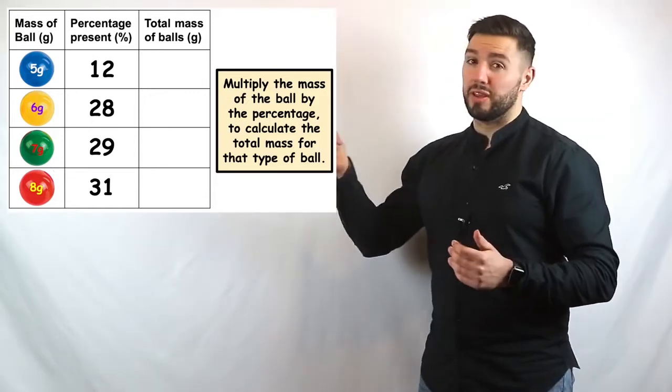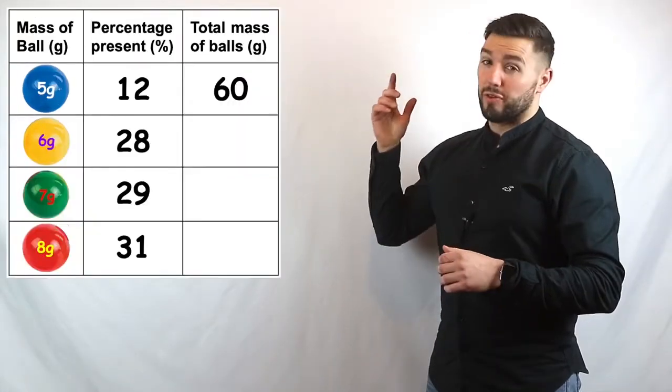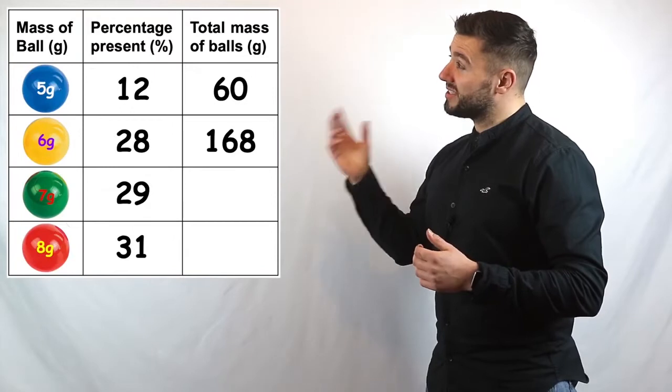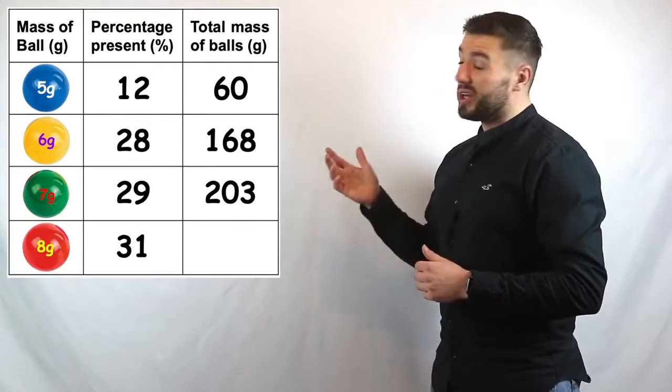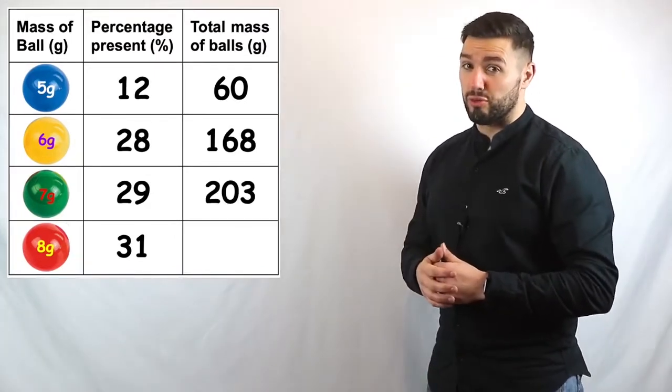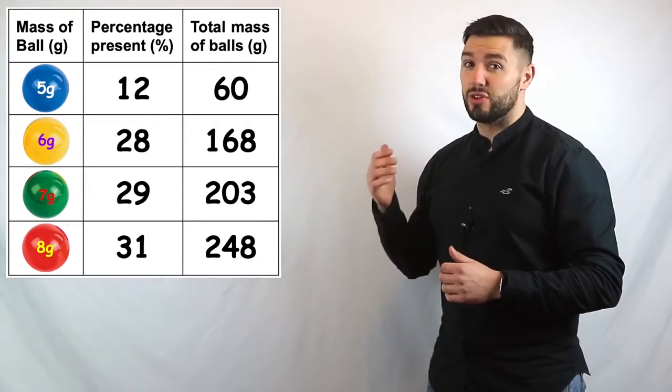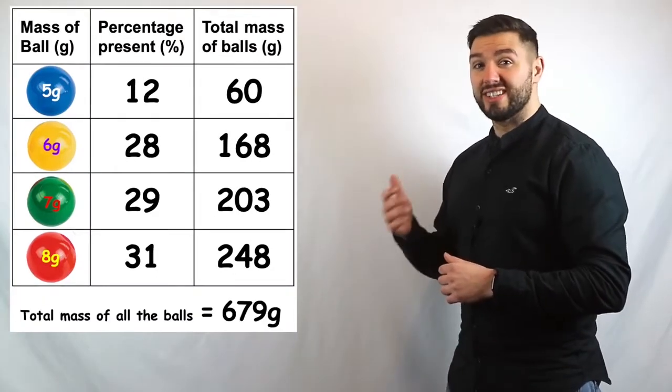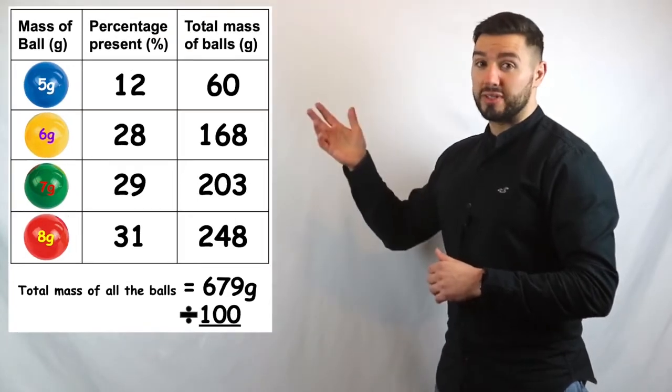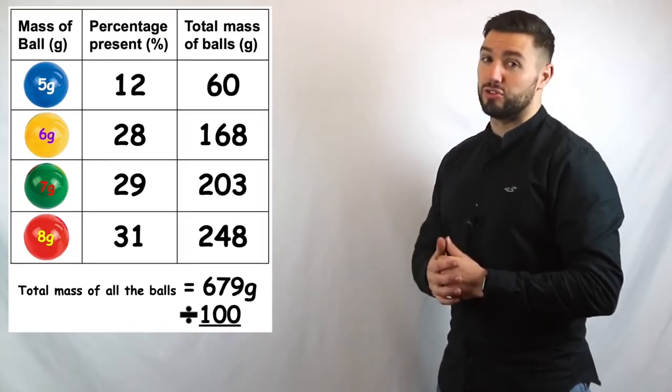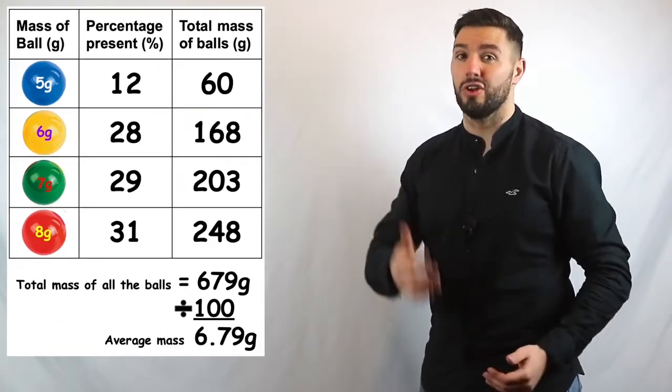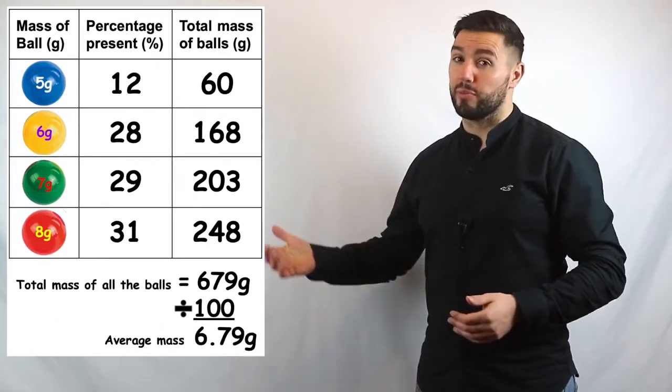So, we start by multiplying the percentage by the mass. So, for the first one, we get 12 times 5 is equal to 60, 28 times 6 is 168, 29 times 7 is 203, and 31 times 8 is 248. Next, we add all those numbers together, and that gives us 679. Now, we had 100%, so we have to divide by 100. So, 679 divided by 100 gives us 6.79, and that's the average mass of one of the balls.